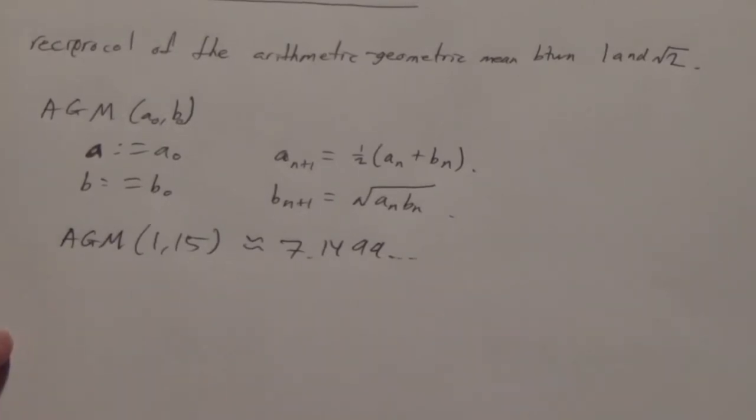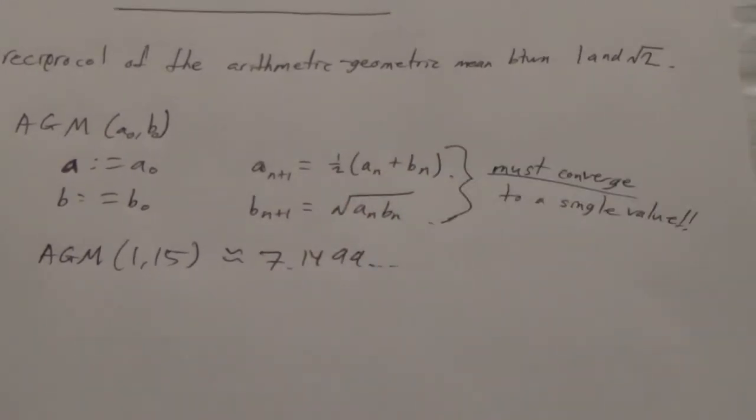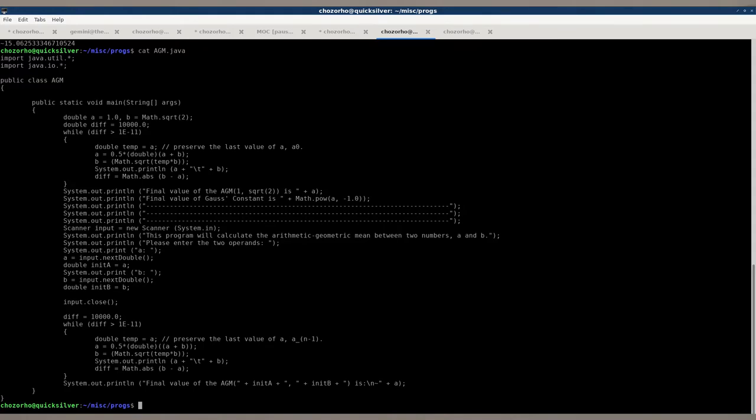And as it turns out, you can see the Java program that is right here. And there are some examples that are shown. So, AGM between 1 and 8 would be something like 5.6 something. And I tried to make this as precise as I could. I think the Java program is precise to about 1 times 10 to the negative 10.